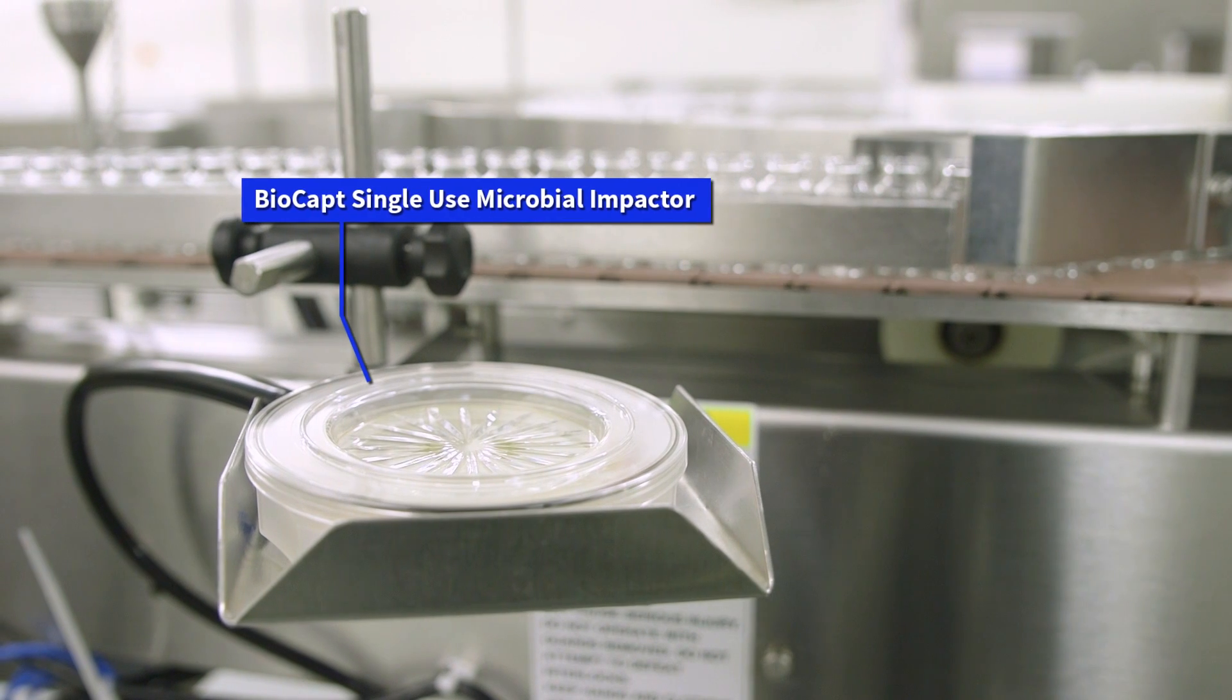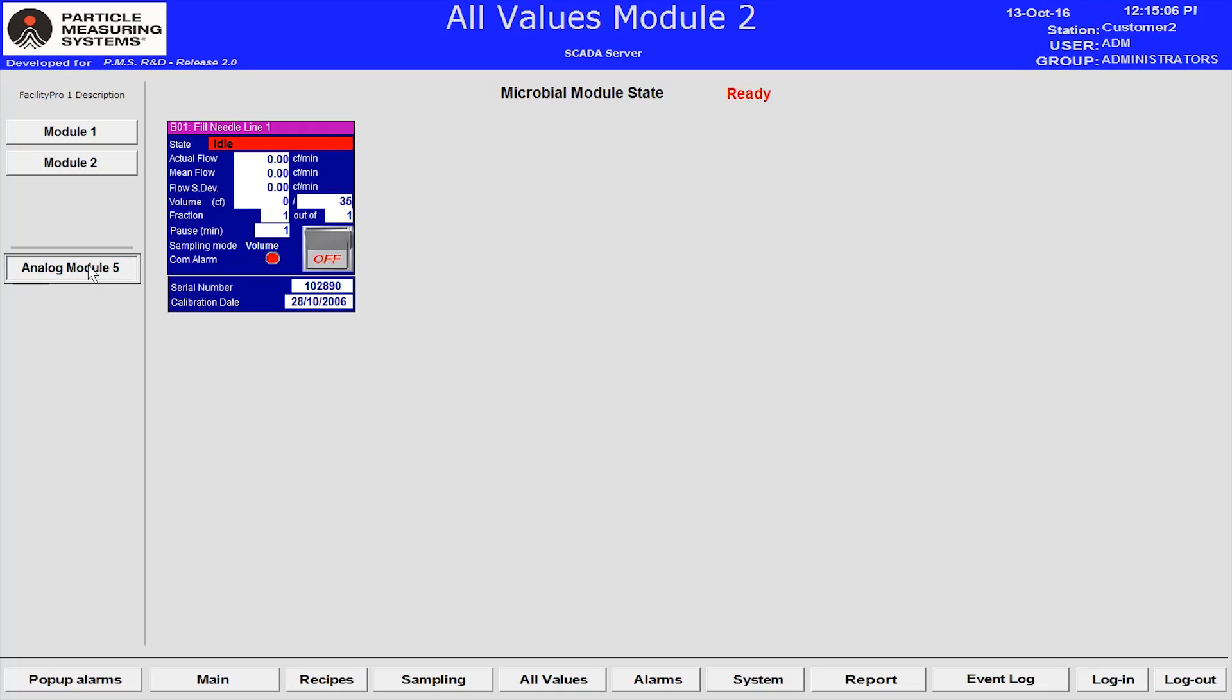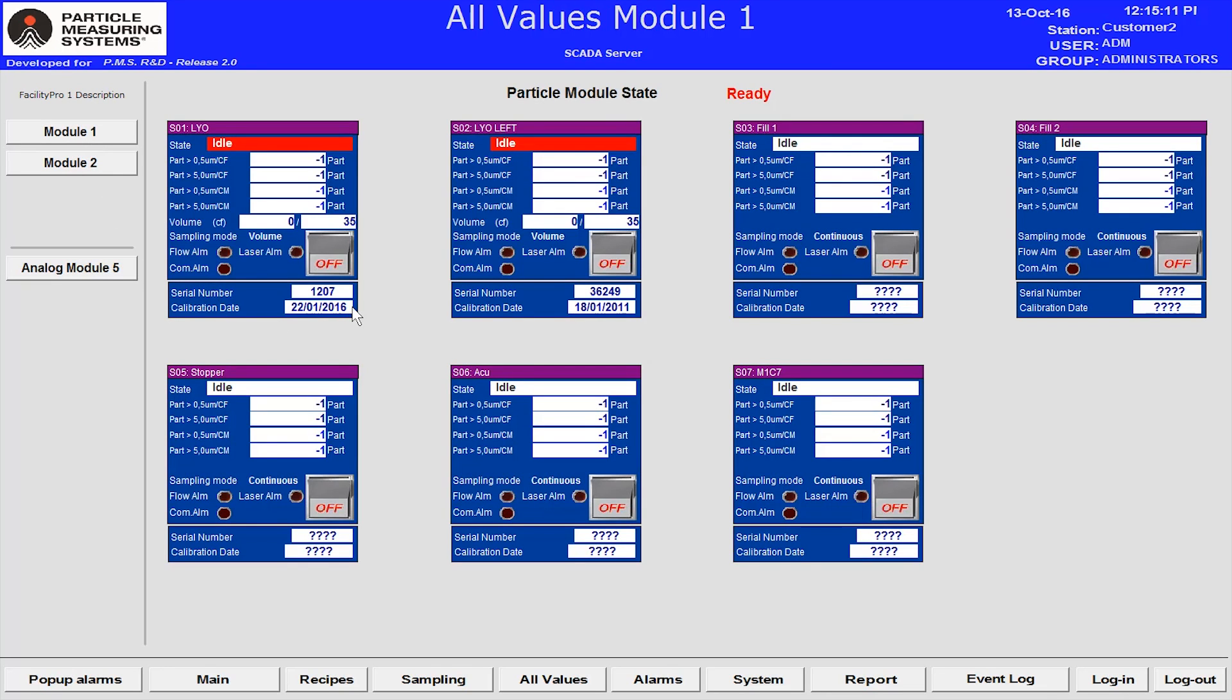Microbial samplers are used to monitor for any biological activity in the clean room. Other sensors can include temperature, humidity, and pressure, as well as sensors to indicate activity in various controlled areas.